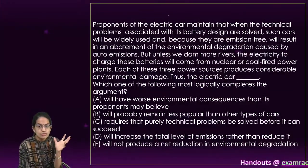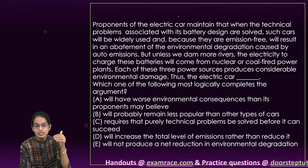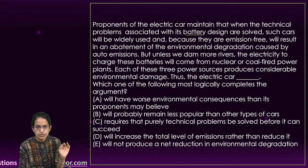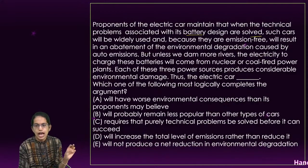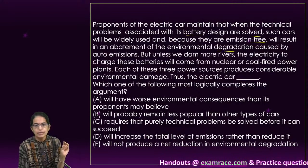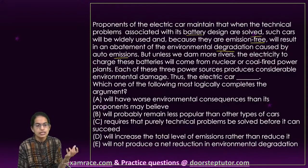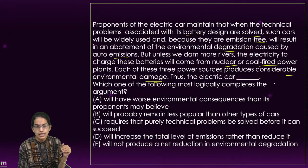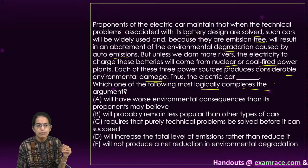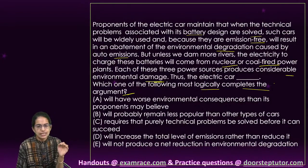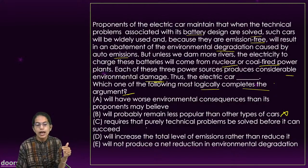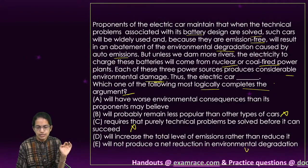The next question is about electric cars — contemporary topics like these are asked a lot in GS and also appear in exam papers. The question says: proponents of electric cars maintain that when technical problems associated with battery design are solved, such cars would be widely used as they would be emission-free and result in abatement of environmental degradation caused by auto emissions. But unless we dam more rivers, electricity to charge these batteries comes from either nuclear or coal power, and each of these produces environmental damage. Thus, electric cars are — which of the following most logically completes the argument?